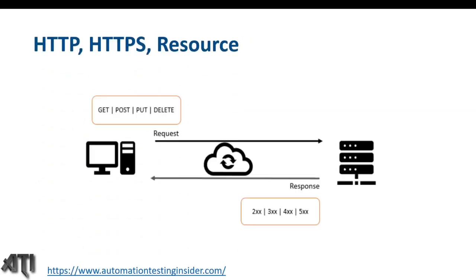So what is HTTP, HTTPS, and Resource? In the last couple of videos, we talked about what is an API, what is API testing, and we have seen client-server architecture — three-tier client-server application architecture — where we saw how we are sending the request and getting the response. Similarly, when we talk about HTTP and HTTPS, these are protocols: Hypertext Transfer Protocol and Hypertext Transfer Protocol Secure, used for communication between client and server over the network.